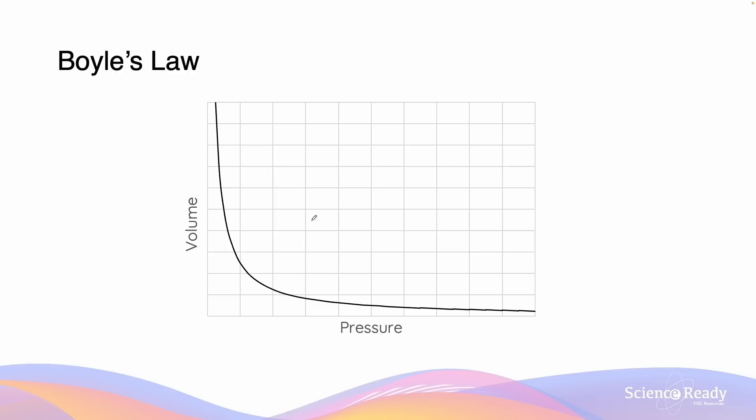The inversely proportional relationship between volume and pressure in Boyle's law is demonstrated by this graph. We can see that as the volume increases, the gas pressure decreases, and inversely when the gas pressure increases, the volume becomes exponentially smaller and decreases.